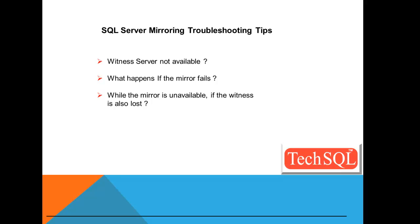What happens when mirroring fails? The principal continues functioning, but the mirroring state is disconnected and the principal is running exposed. Once the mirror database becomes operational, it automatically assumes the role of the mirror and starts synchronizing with the principal. For as long as the mirroring state says disconnected, the transaction log space on the principal cannot be reused.